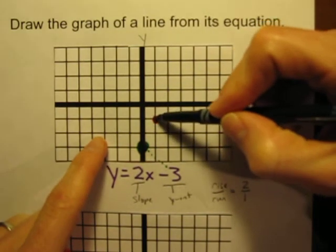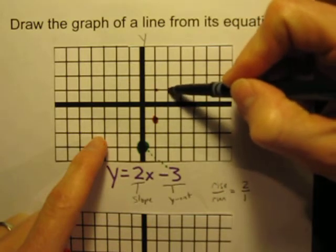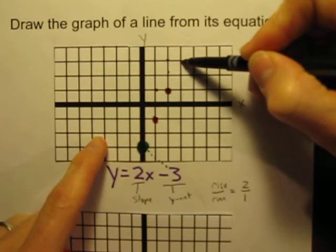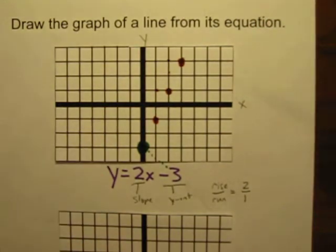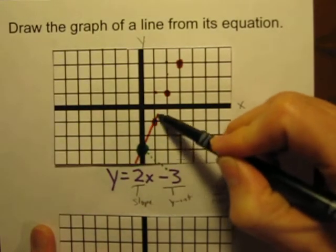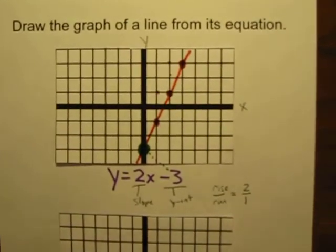Let's do the same. Rise over run, we're going to go up 2, 1, 2, over 1, put a dot. Rise 2, over 1, put a dot. And now you can see our line being set up here, and I can just connect those points. There's our line. So I took that equation and made a graph of it.